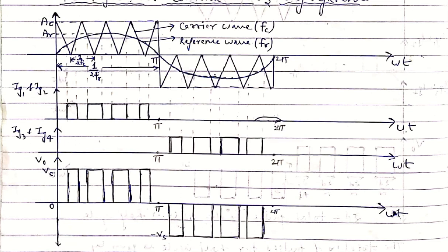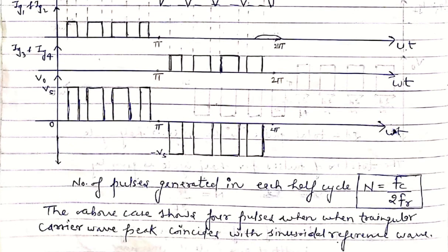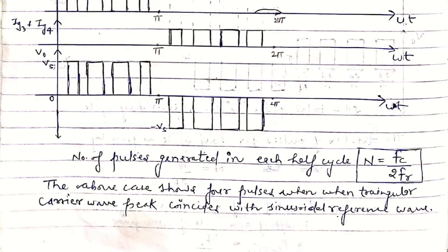In the negative half cycle, pulses are generated having amplitude of minus VS, and there are four pulses present. The number of pulses generated in each half cycle is given by the formula n = FC / (2·FR). So in this case — peak of carrier coinciding with zero of reference — four pulses are generated per half cycle, as shown when the triangular carrier wave is compared with the sinusoidal reference wave.